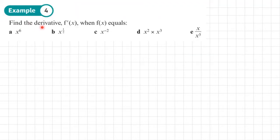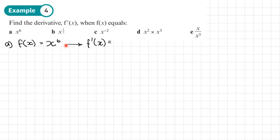Example 4. Find the derivative f dash of x. Part a: f of x equals x to the power 6. The derivative f dash of x — we multiply by the power, so it becomes 6x, then subtract 1 from the power, giving 6x to the power 5. So for the graph of x to the power 6, substitute in the x coordinate to get the gradient.